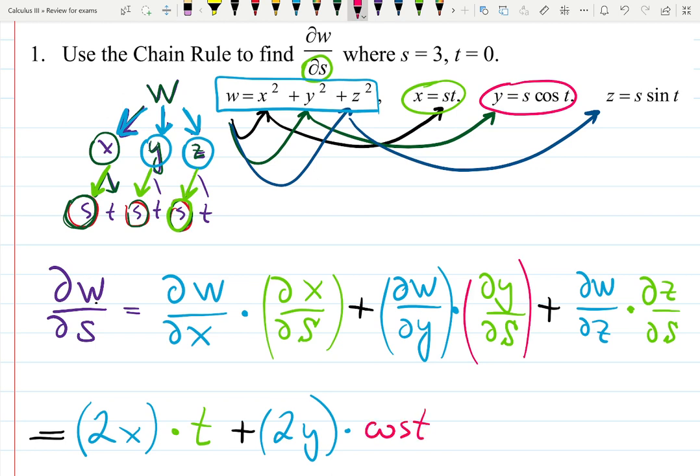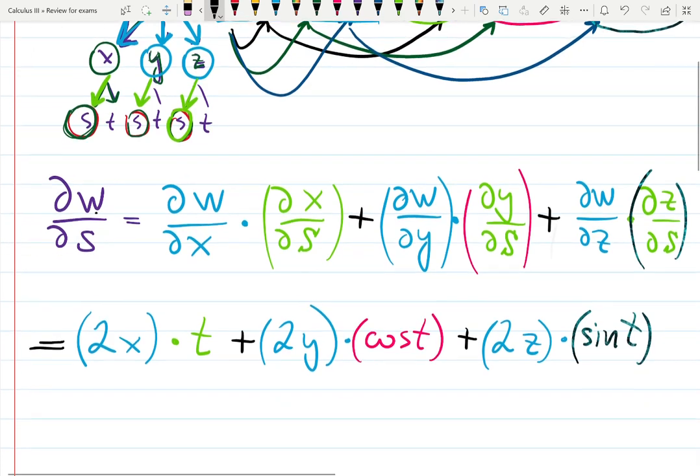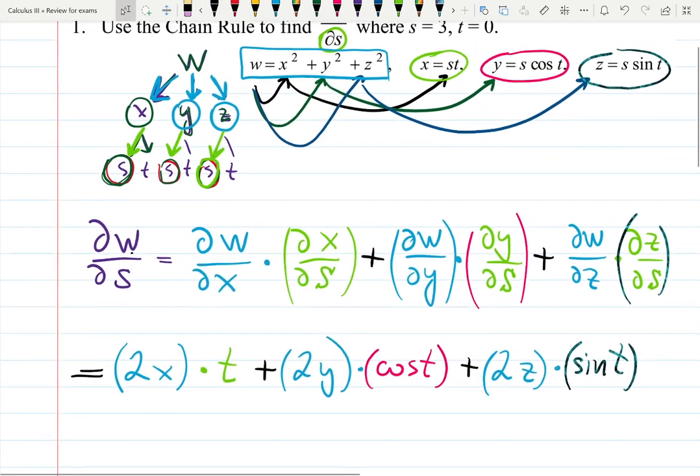Or means plus. Derivative of W with respect to Z - looking in the box it gives me 2Z, times which color did not use yet, let's do greenish, derivative of Z with respect to S will be constant sine T. And this is the result of the derivative. We just need to plug in the point now.